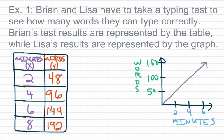Example 1 says that Brian and Lisa have to take a typing test to see how many words they can type correctly. Brian's test results are represented by the table, while Lisa's results are represented by the graph. We want to identify the slope and the initial value, or y-intercept, for these two functions.